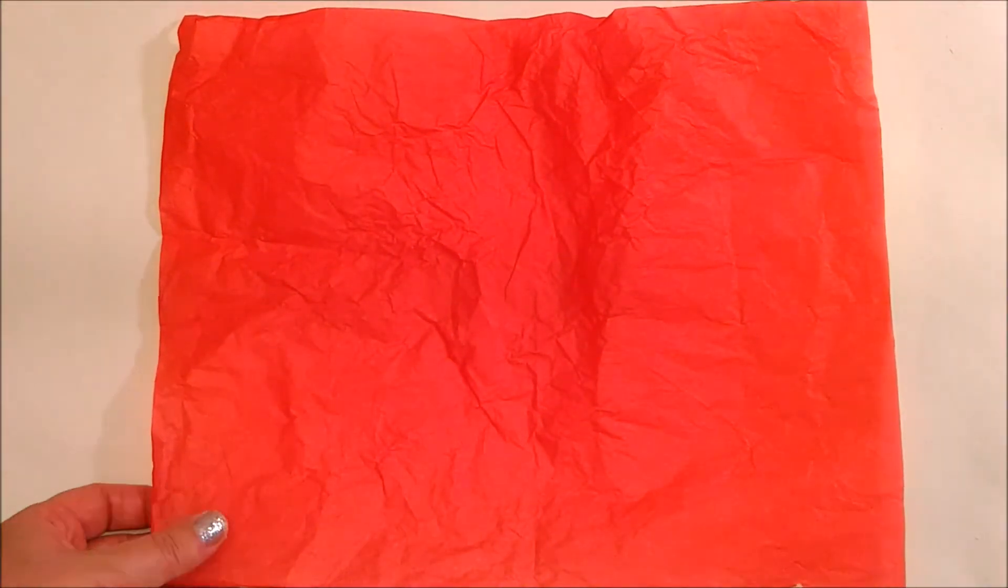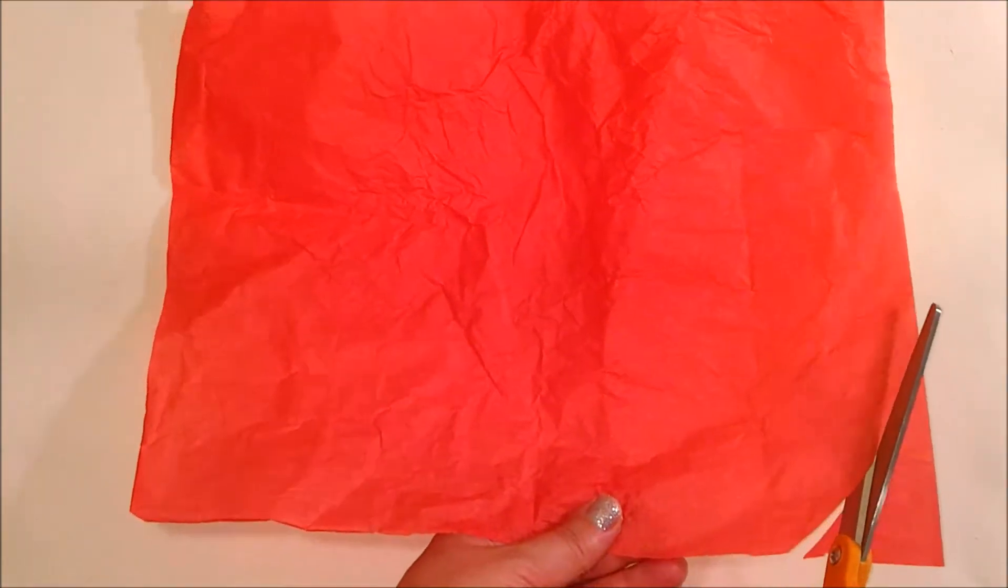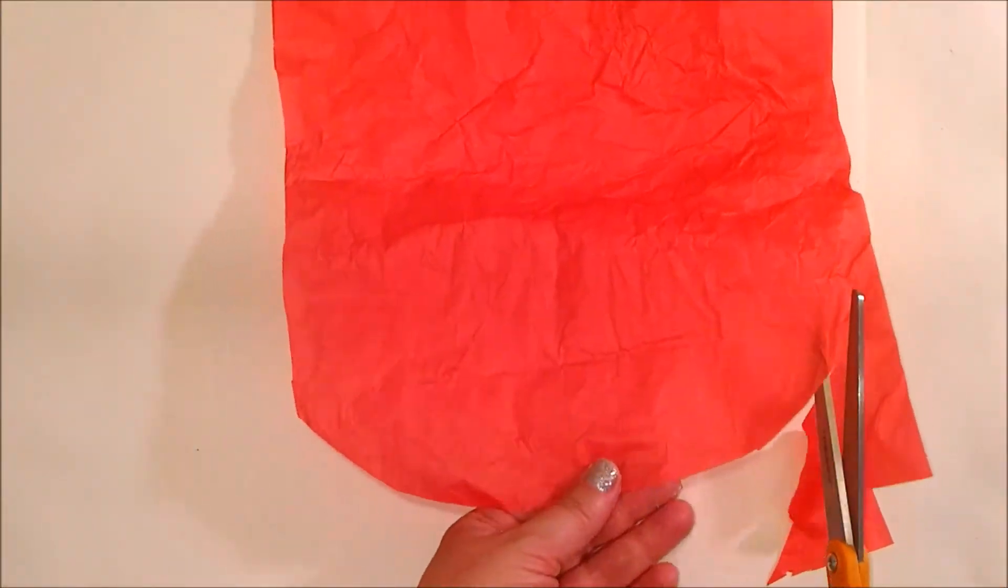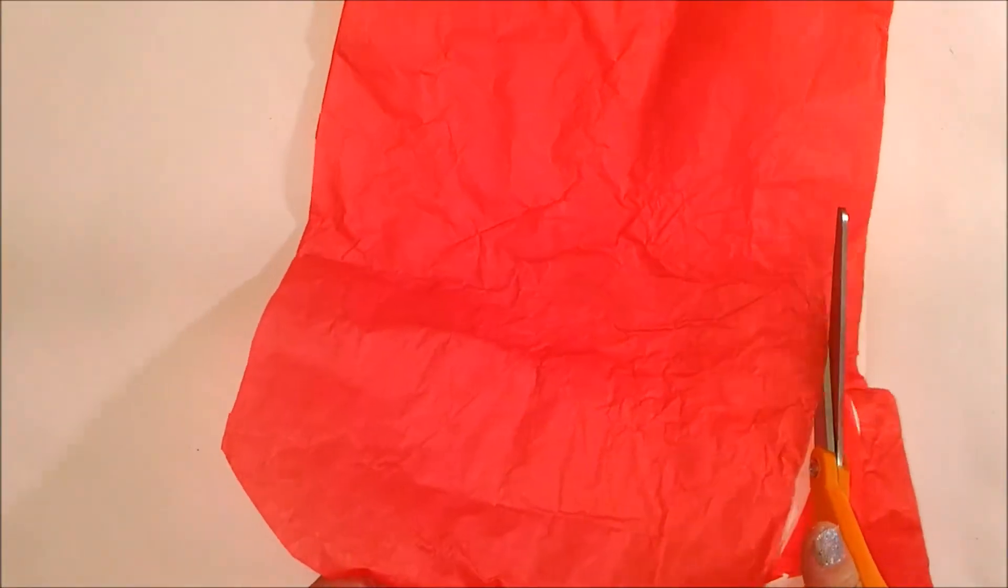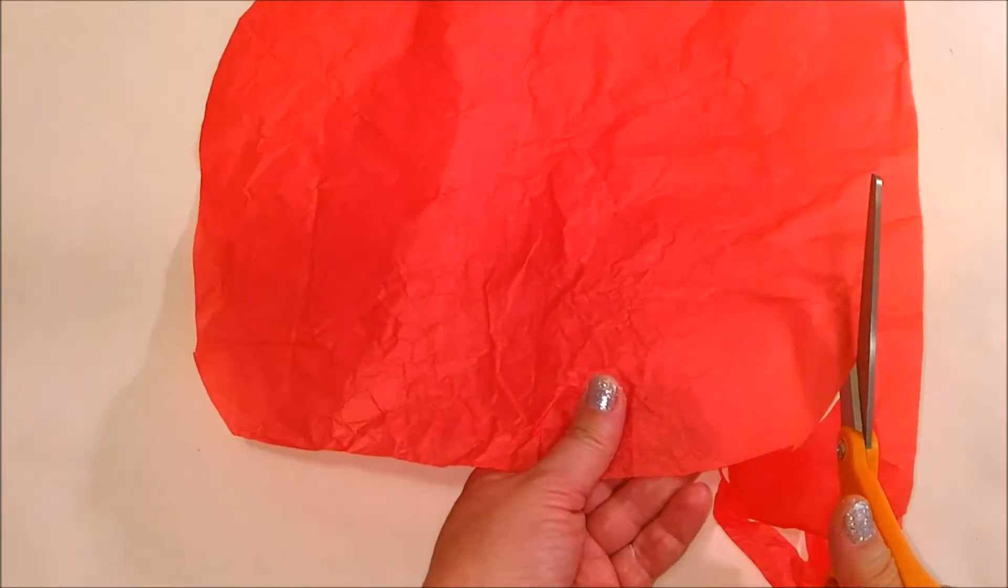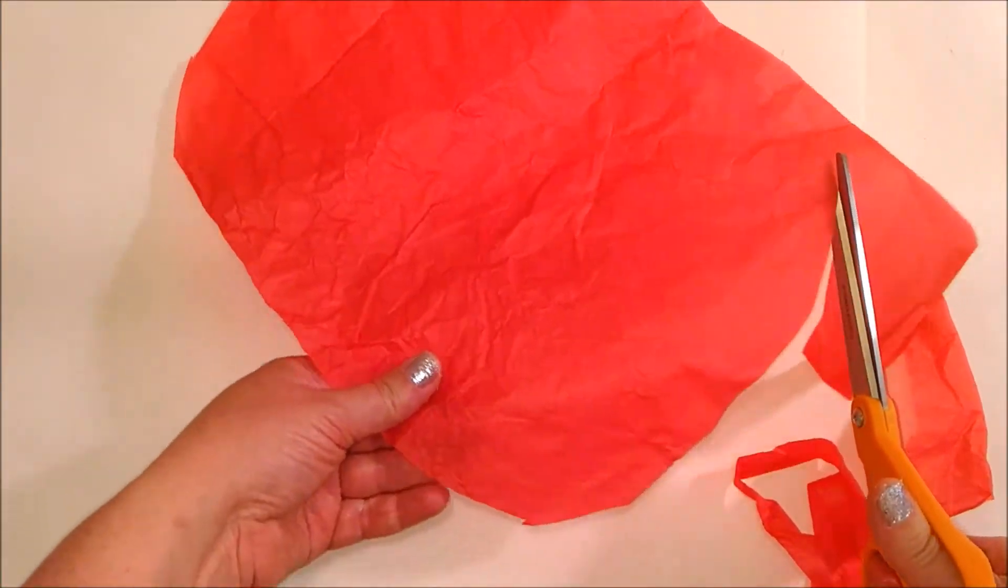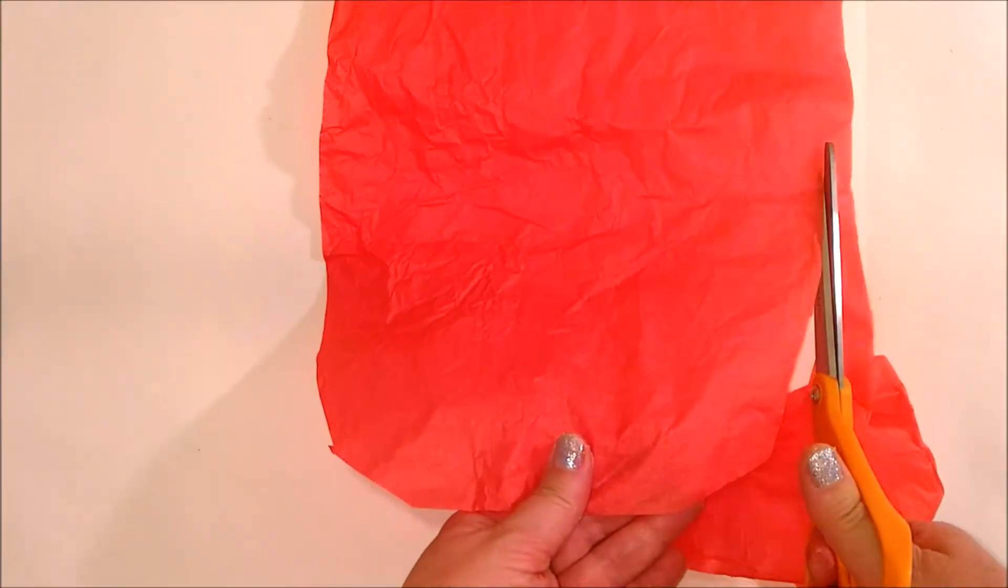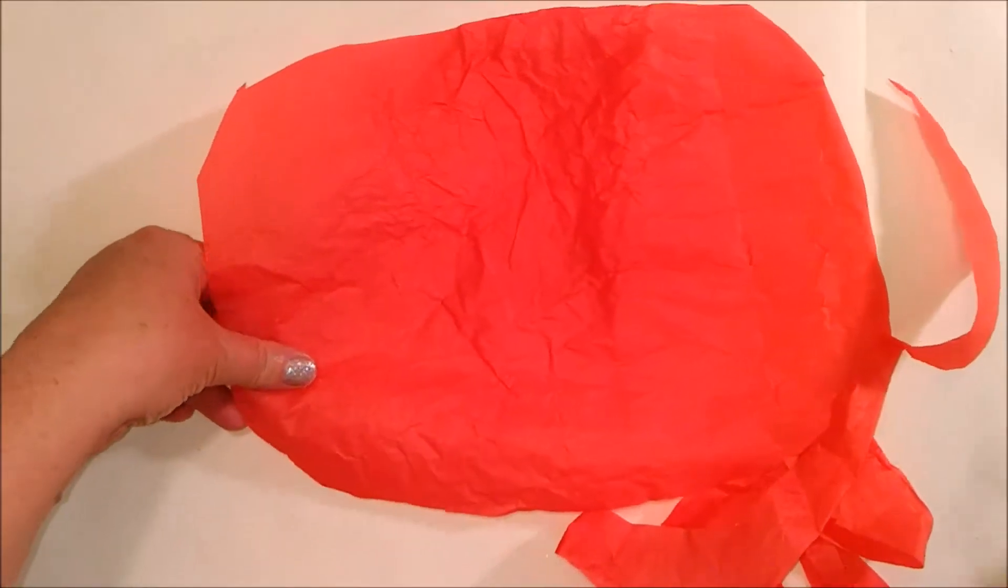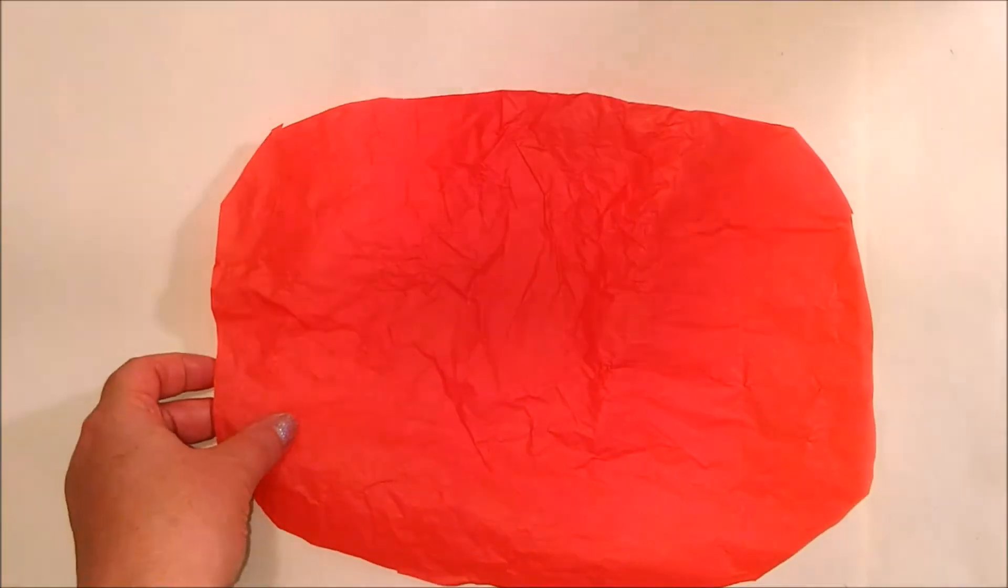The tissue paper is very simple. It's just cutting the tissue paper starting out in a circle. It doesn't have to be an exact circle. It doesn't have to be perfect. Just a circle that you put your heart into. There we go.